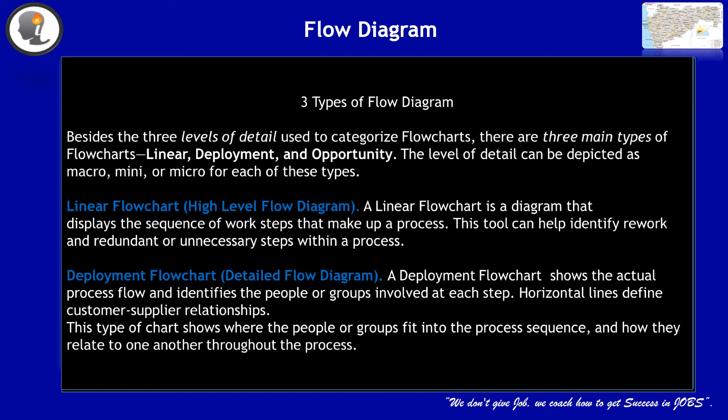The second type is the detailed flow diagram, also known as deployment flow diagram. It shows the actual process flow and identifies the people or groups involved at each step, and defines customer or supplier relationships. This type of chart shows where people or groups fit into the process sequence and how they are related to each other. In frequently asked questions, if the question involves suppliers, the answer is detail flow diagram.